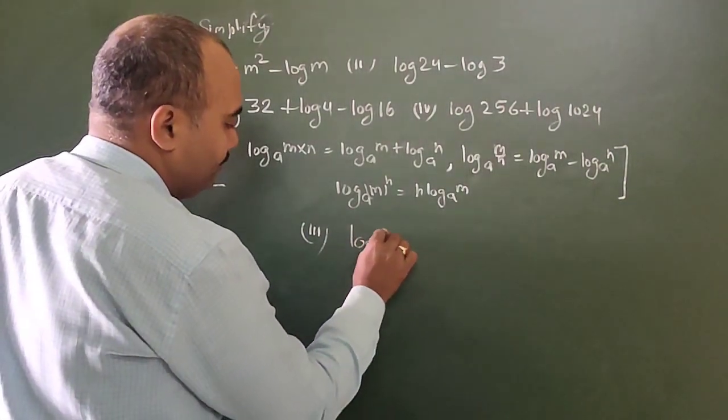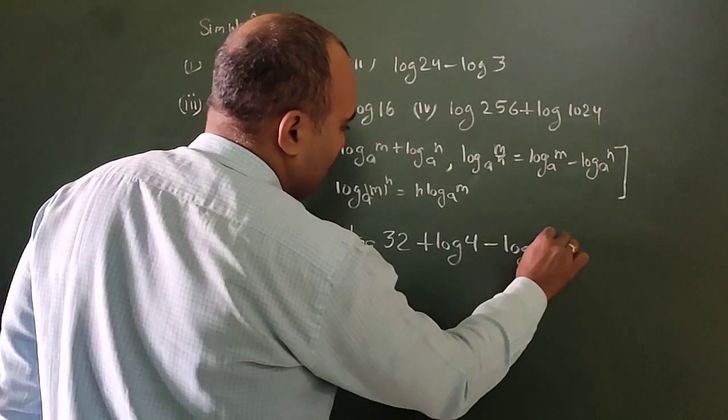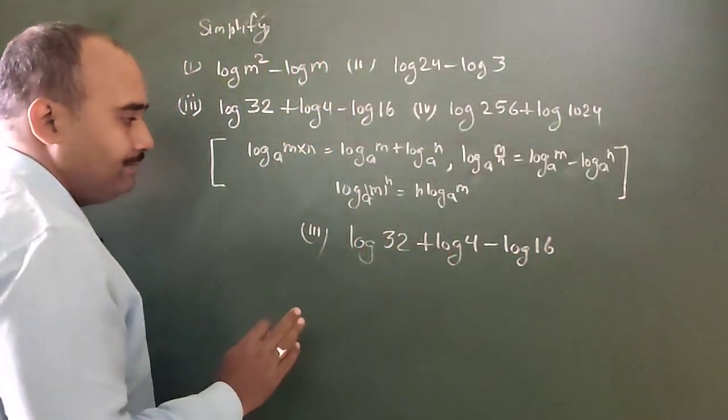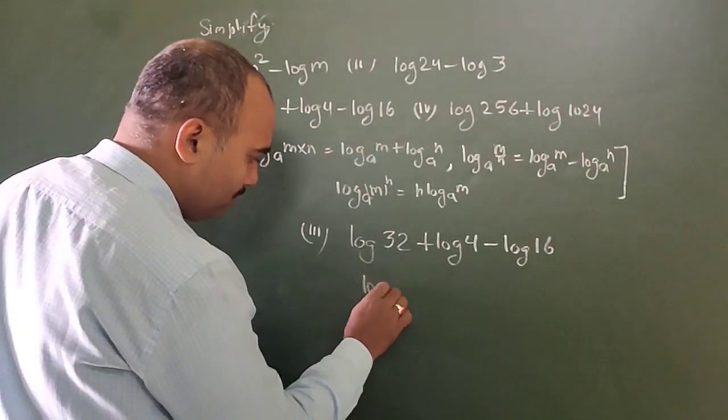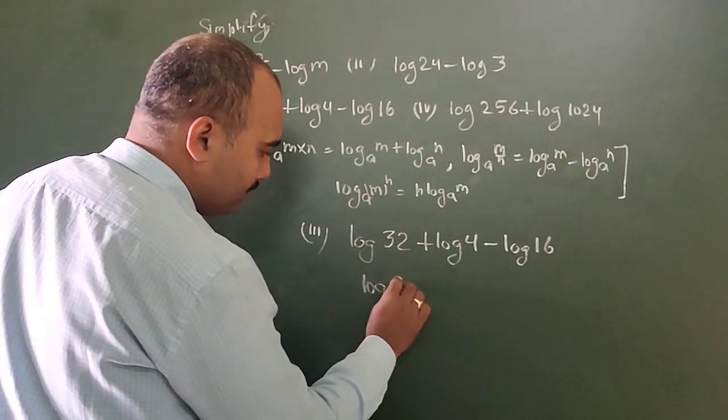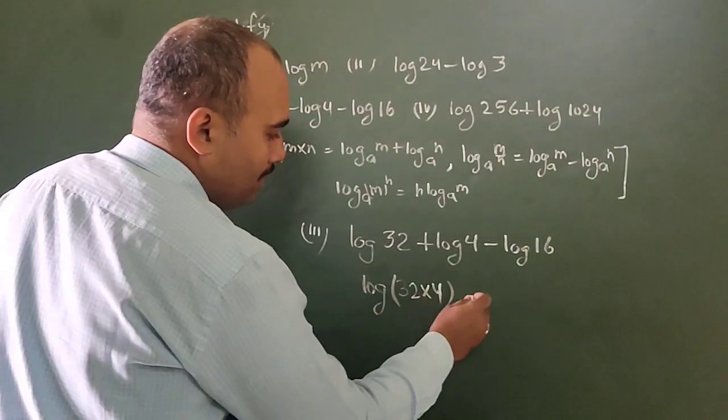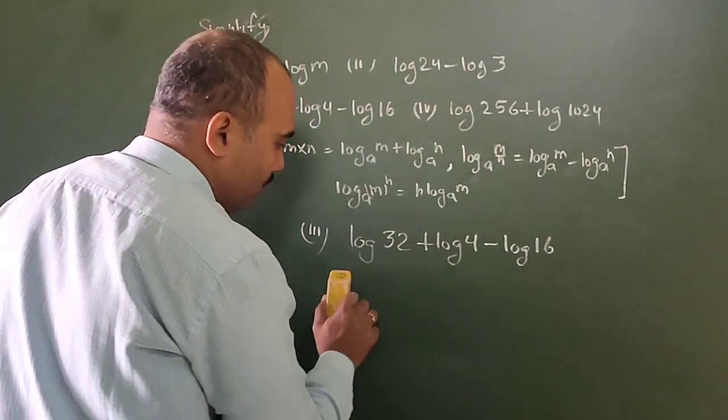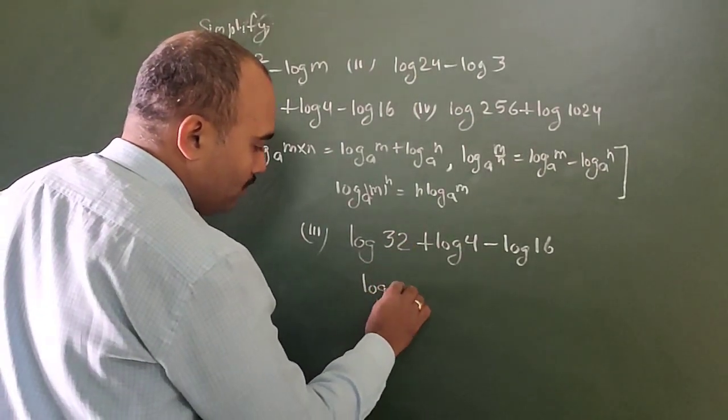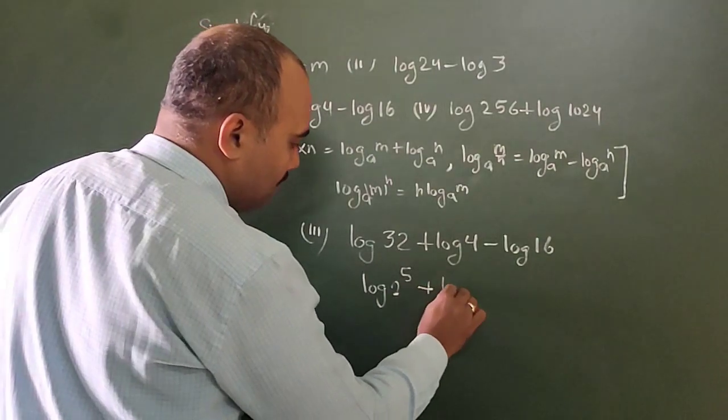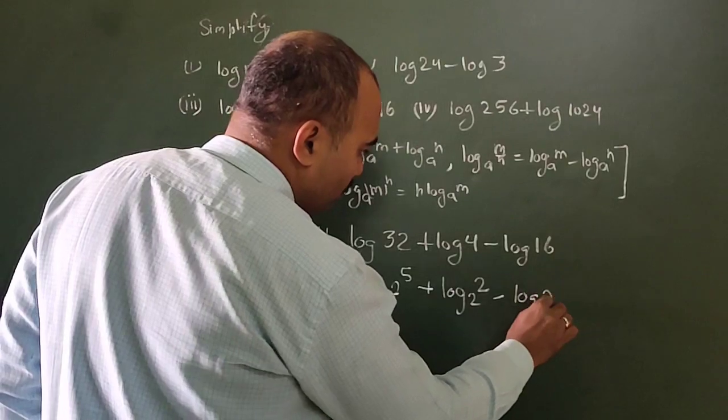Log 32 plus log 4 minus log 16. Now plus becomes multiplication and minus becomes division. Apply the formula: log 32 times 4 divided by 16. We can simplify this as log 2 to the power 5, log 4 can also be written as log 2 to the power 2, and log 16 is log 2 to the power 4.